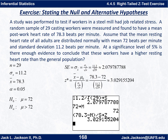We can figure out z-star, our standardized test statistic. It's the z-score of x-bar in the distribution of x-bars assuming the null hypothesis is true: z-star equals x-bar minus mu-naught, divided by sigma over the square root of n. Since I have sigma/√n stored as s and mu-naught stored as m, I just compute (78.3 − m) / s in the calculator and store that test statistic as z.